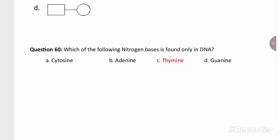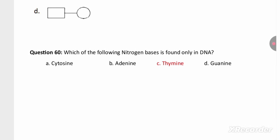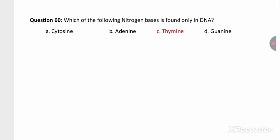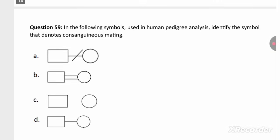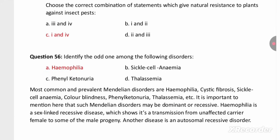Which nitrogen base is found only in DNA? It is thymine, and in RNA it is uracil. These are all the questions that are going to be helpful for you to revise for the Karnataka CET biology. Thank you, students.